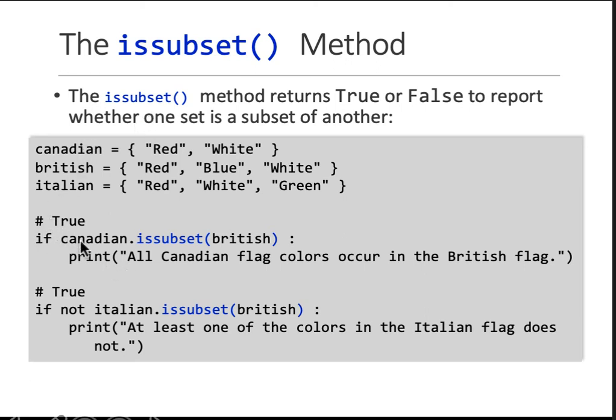So you say if one set is_subset of the other set. So if it is, it returns true. If not Italian. So here you're just putting a not to check it. If you just say if Italian.is_subset British, it will return false. So it will never come inside this if condition. When you put a not, this is false, not of false becomes true. So you come inside the if and print this. But the function is, is_subset.